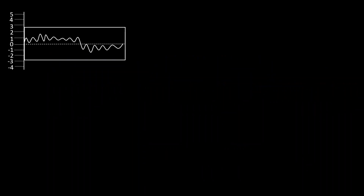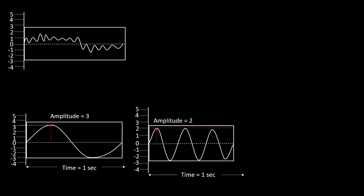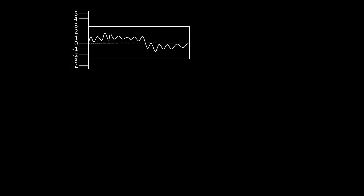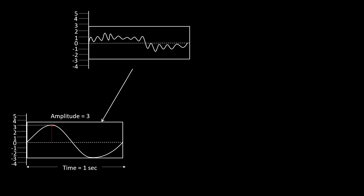Now let us assume that we have this complex signal. Using Fourier transform, we can represent this complex signal as the sum of different frequency components. These 3 frequency components, when summed, produce this particular complex wave.